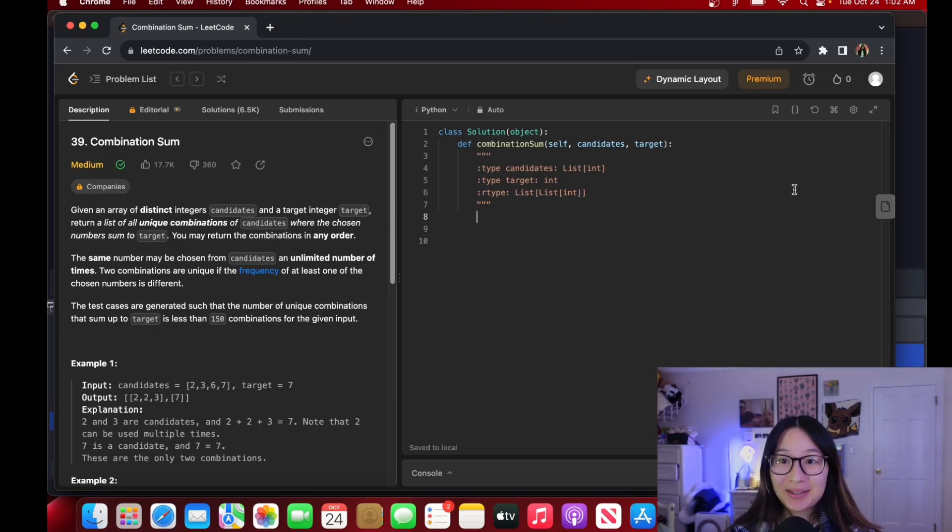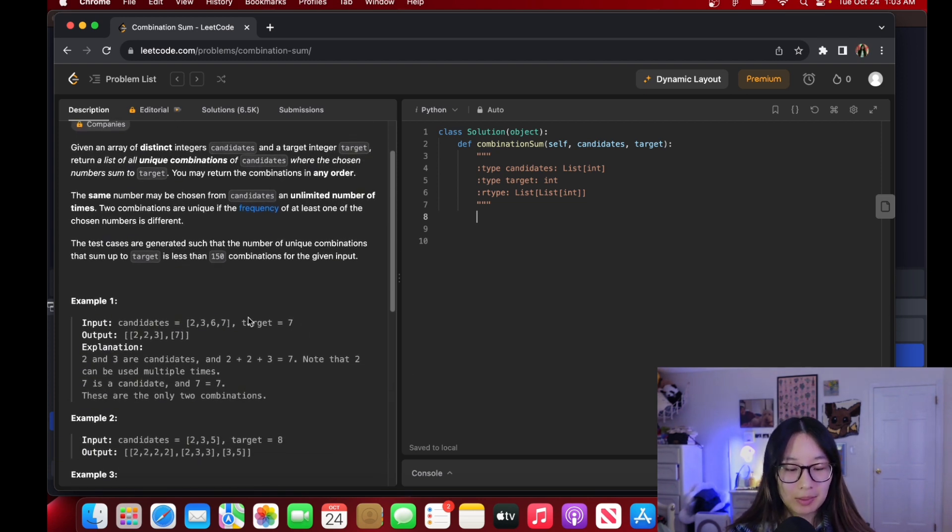LeetCode 39 combination sum. It'll be very chill. Given an array of distinct integers candidates and a target integer target, return a list of all unique combinations of candidates where the chosen number sums to target. You may return the combinations in any order. The same number may be chosen from candidates an unlimited number of times.